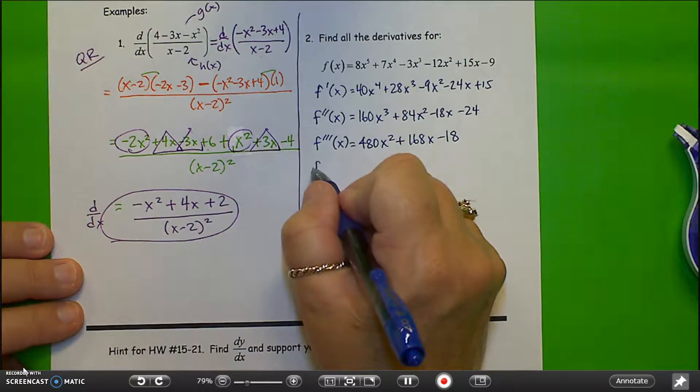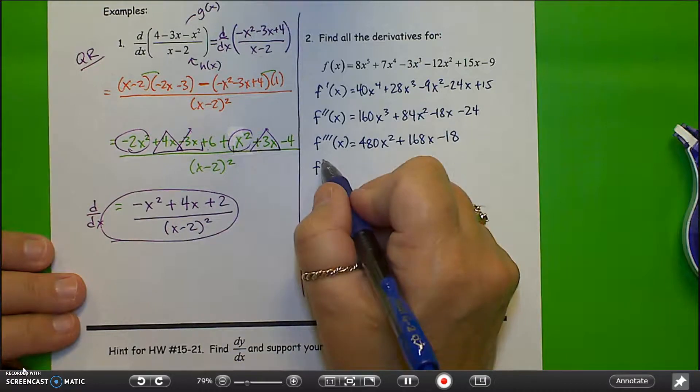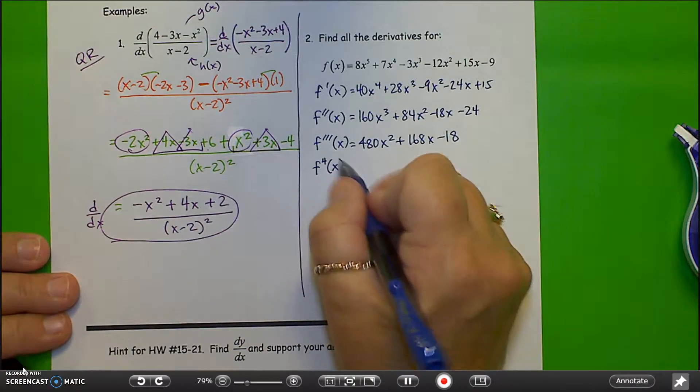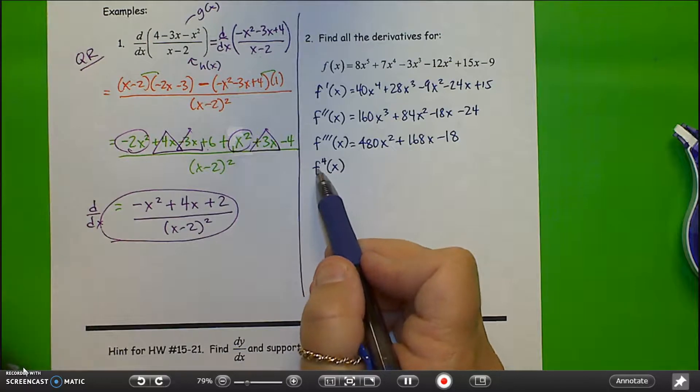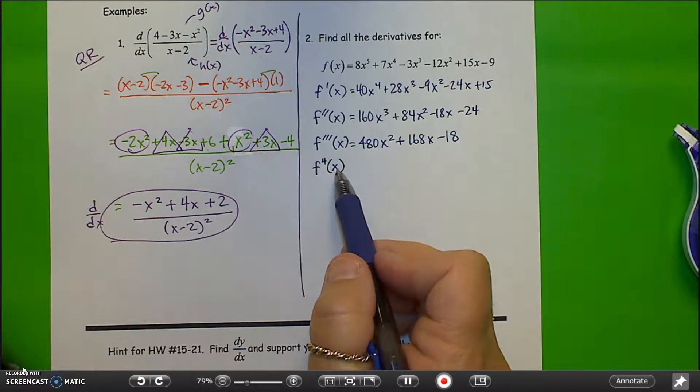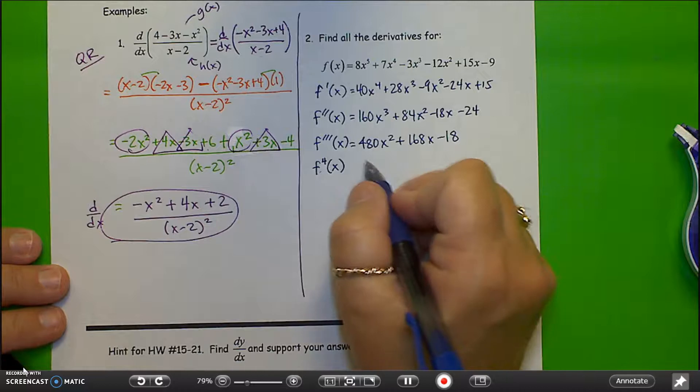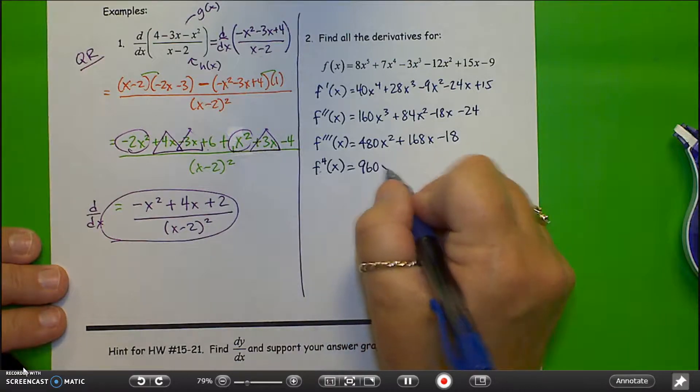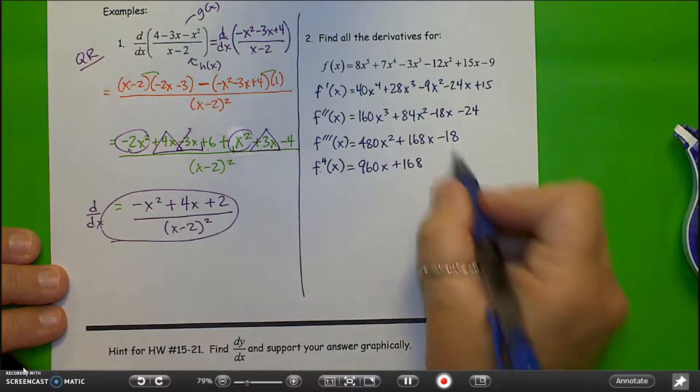Now, now I'm going to change my notation. I don't want so many tick marks that I can't, that it takes long to count them. So, we'll just use this. Now this doesn't mean f of x to the fourth power. This is the fourth derivative of the function, f of x. So I have 960x, plus 168. That's gone.